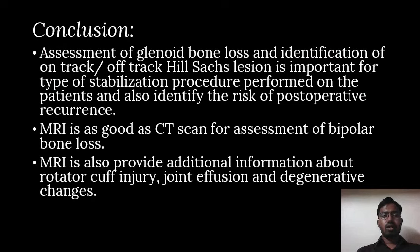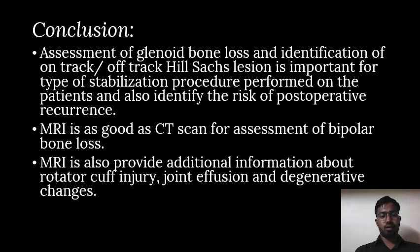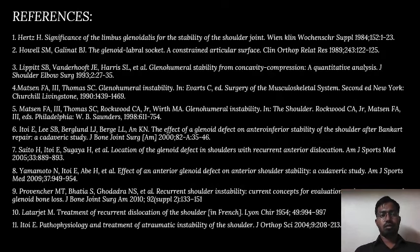To conclude, assessment of glenoid bone loss and identification of on-track or off-track Hill-Sachs lesion is important for determining the type of stabilization procedure performed on the patients and to identify the risk of post-operative recurrence. MRI is as good as CT for assessment of bipolar bone loss and also provides additional information about rotator cuff injury, joint effusion, and degenerative changes. Thank you. These were the references used in our study.